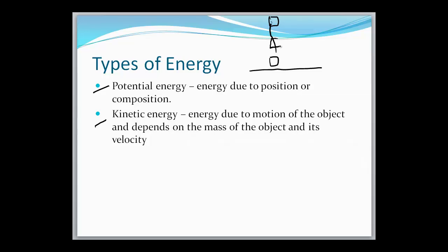At a lower height, it has less potential energy. In chemistry, potential energy relates to the structure of the compound — chemical potential energy describes how much energy can be released or absorbed based on a molecule's or compound's composition. Kinetic energy, on the other hand, is energy due to motion; the faster something moves, the more energy it has.